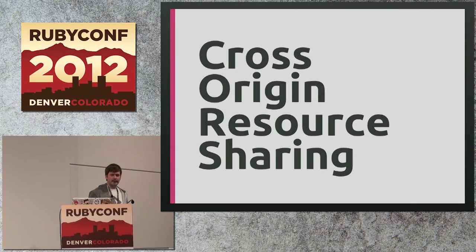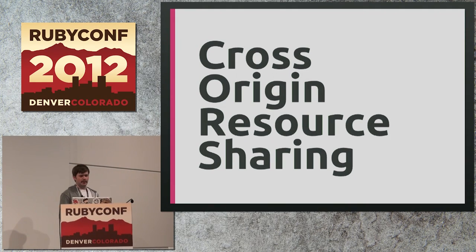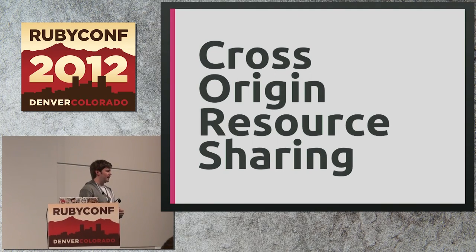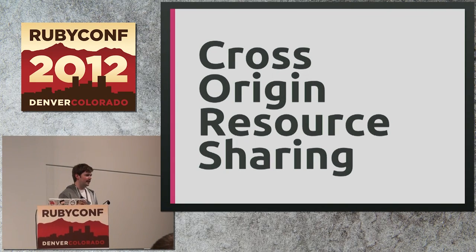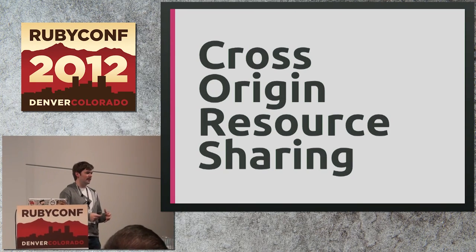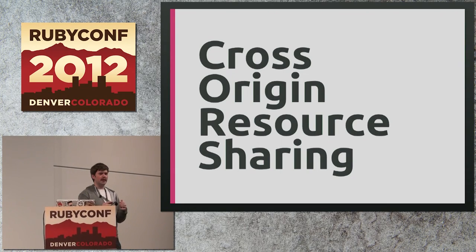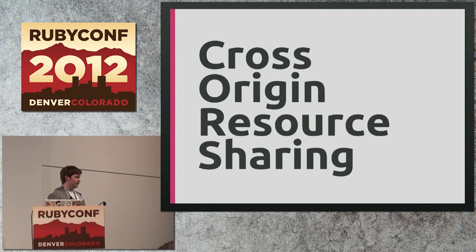For those of you who aren't familiar, cross-origin resource sharing is effectively cross-domain Ajax. Everyone's familiar with using XMLHttpRequests in the browser to request resources from the server without having to refresh the page. Cross-origin resource sharing lets you do that same thing, but rather than being restricted to the same domain the page loads on — which has been the traditional browser security case — you're now able to request from other domains, as long as the server side is implementing this protocol.